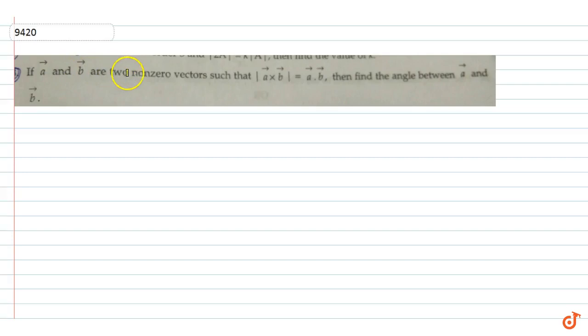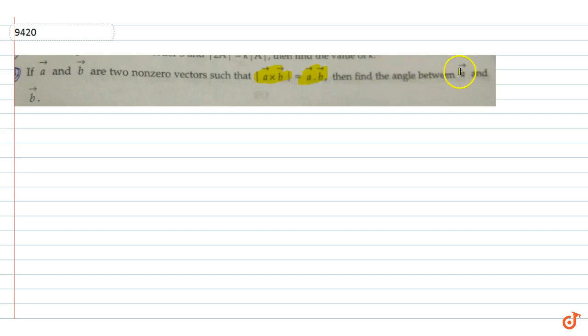If a vector and b vector are two nonzero vectors such that the mode of a vector cross b vector is equal to a vector dot b vector, then find the angle between a vector and b vector.